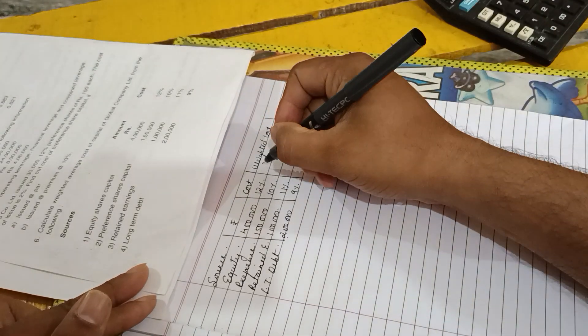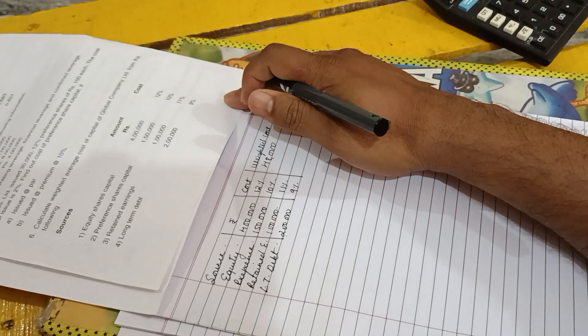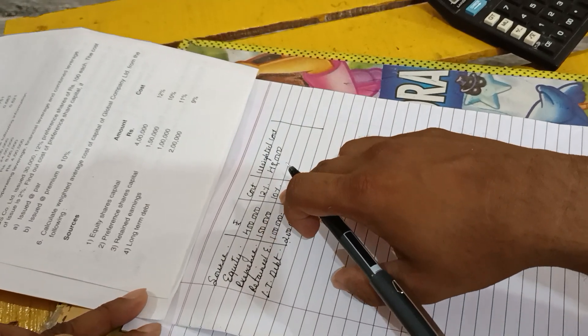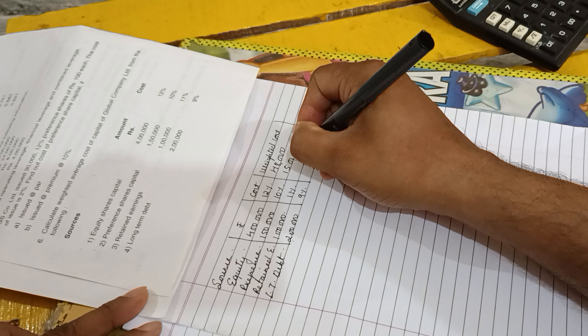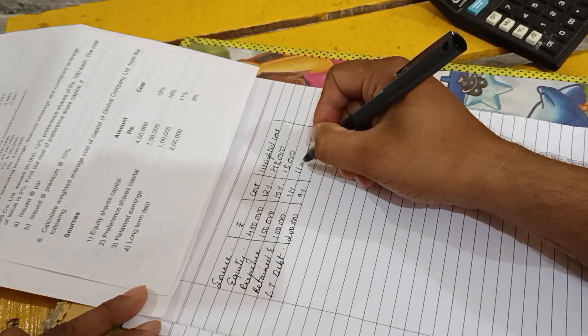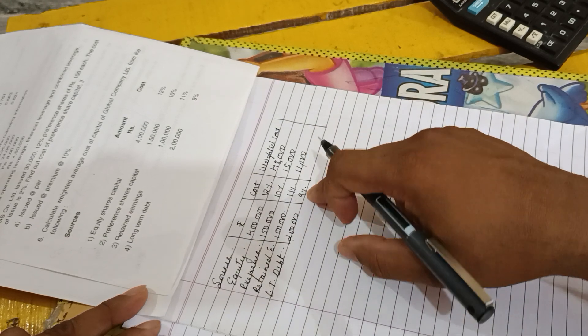The next: one lakh fifty into ten percent gives you fifteen thousand. One lakh into eleven percent gives you eleven thousand. Then two lakh into nine percent gives you eighteen thousand.